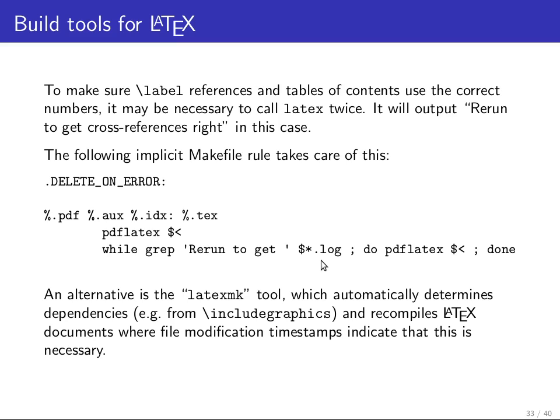As an alternative if you don't want to use Makefiles, there is also the latexmk tool — a specialized make tool that doesn't require a configuration file. It automatically determines various dependencies by figuring out what files LaTeX read when it last processed the document, then recompiles the LaTeX document whenever file modification timestamps indicate it is out of date.